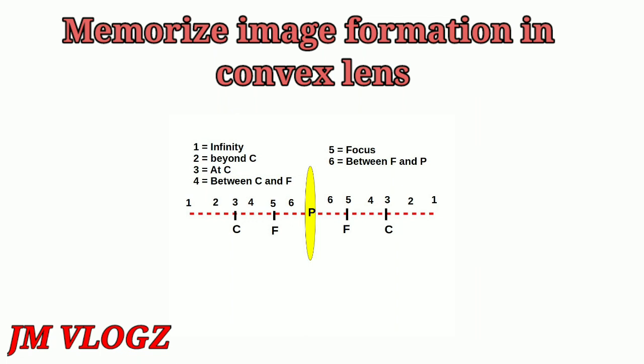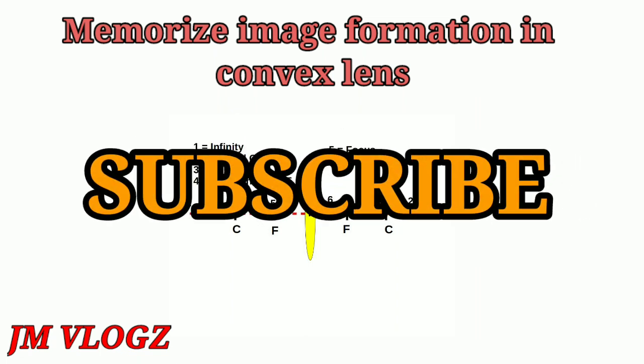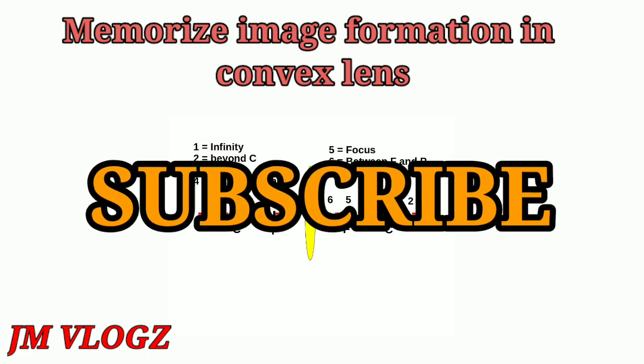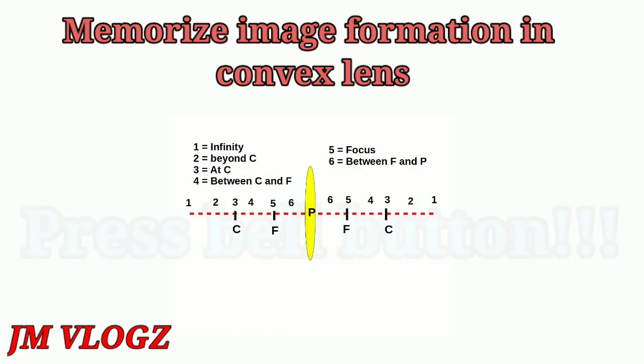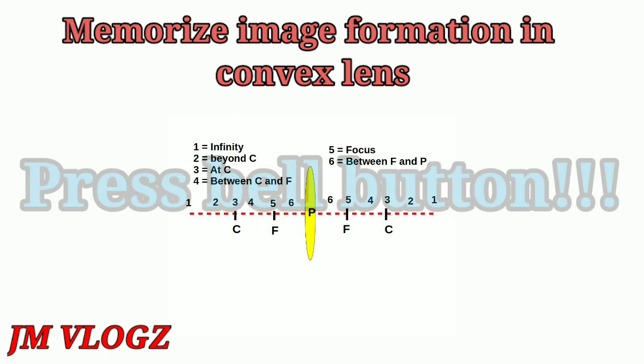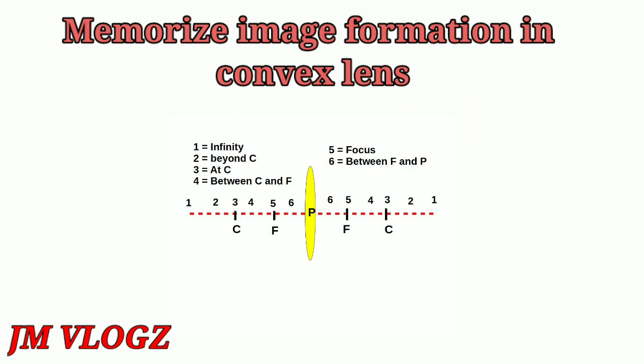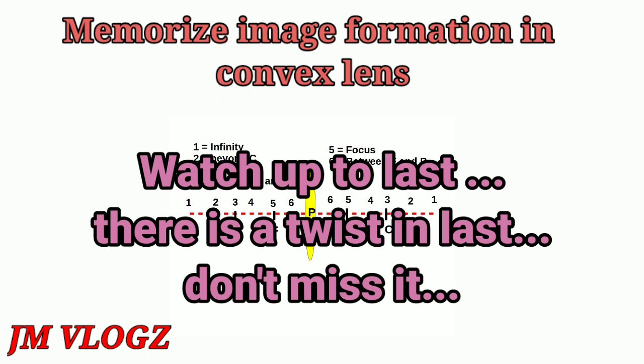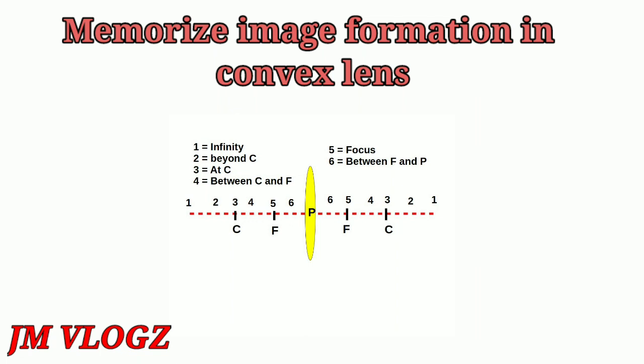Today we are going to discuss an interesting trick to memorize the image formation in convex lenses. Most students face problems memorizing the image formation in convex lenses — that means if the object is in different positions, the image is formed in different positions, and we get really confused when memorizing the position of the image corresponding to different positions of the object.